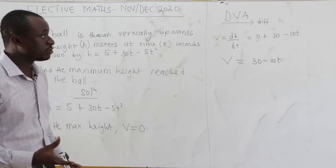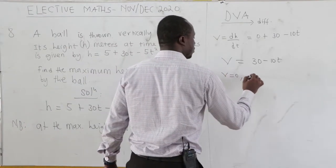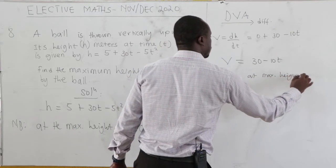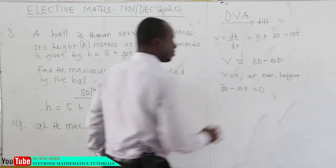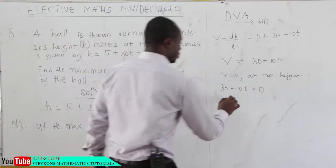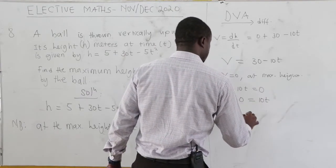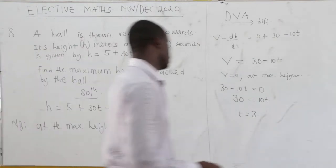At the maximum height, velocity is zero. So 30 - 10t = 0, which gives us 30 = 10t, therefore t = 3.